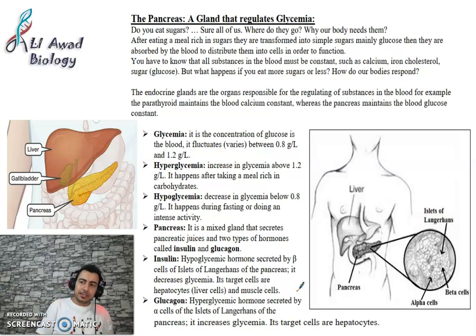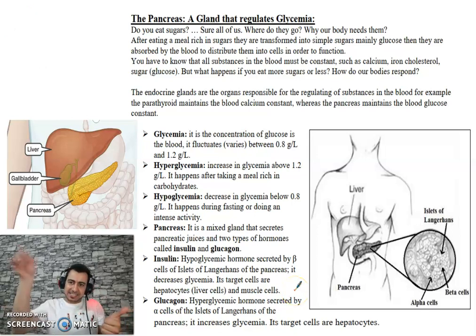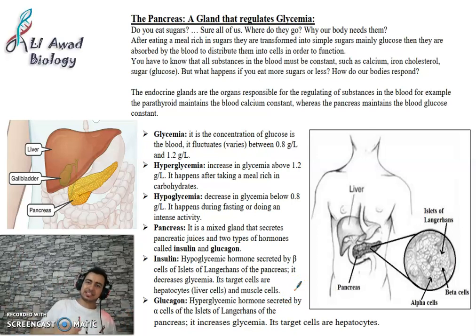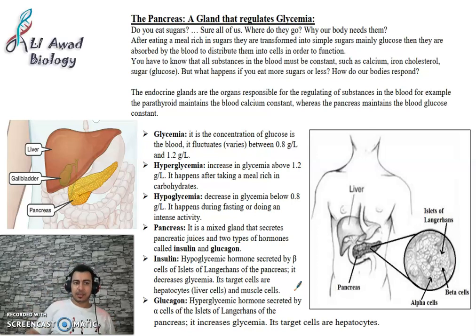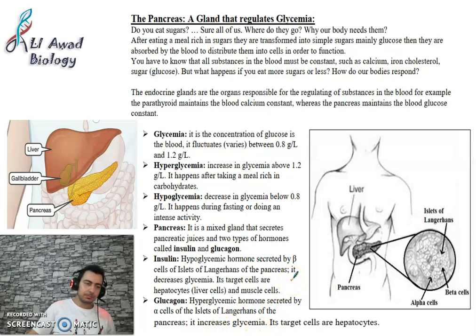Glucagon, on the other hand, is a hyperglycemic hormone — it increases the amount of sugar in the blood. It increases glycemia.